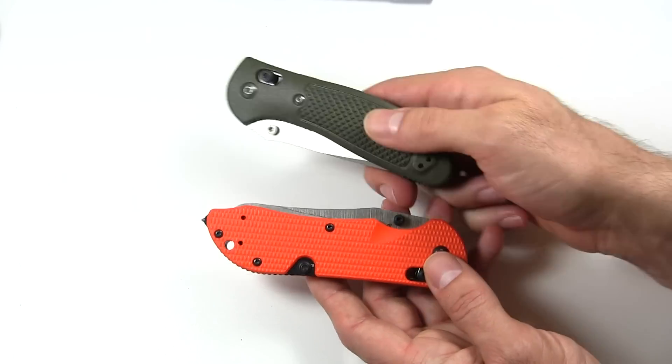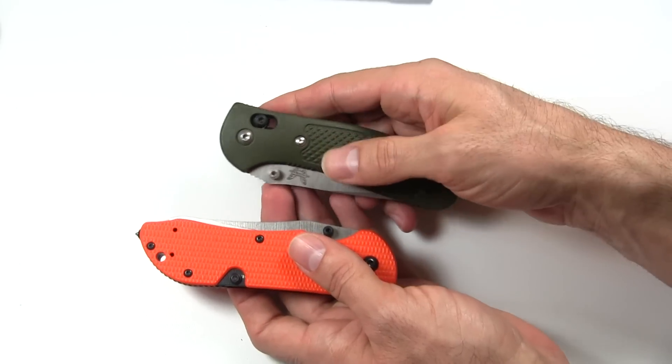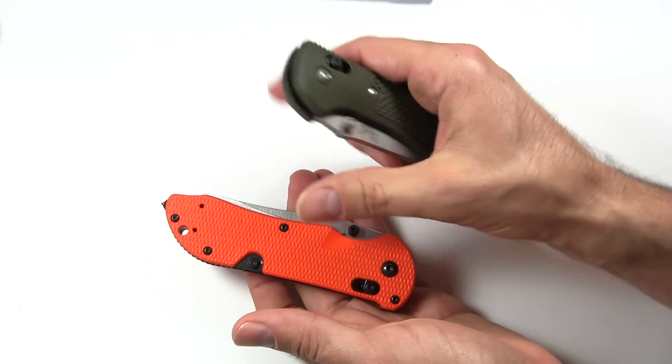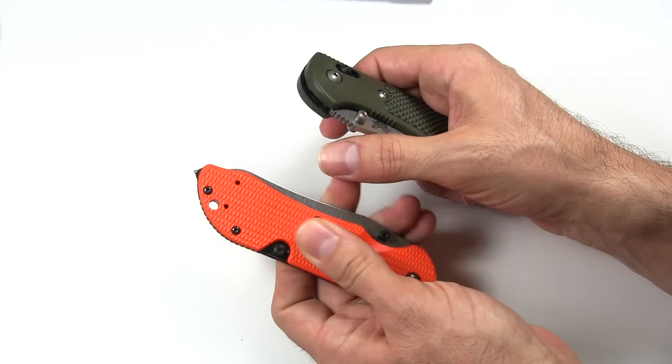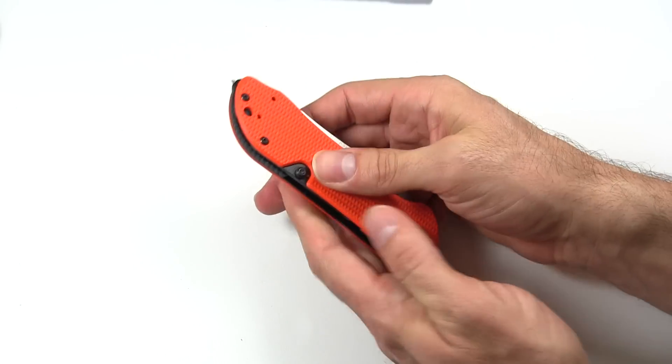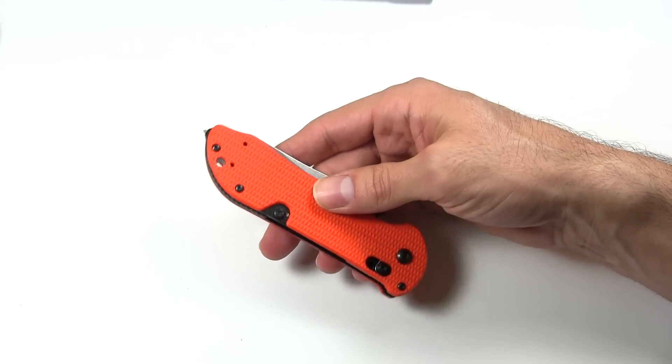And I was used to something like this Griptilian where, you know, the name Griptilian is a pretty grippy knife, but it has some smooth areas here. And even back here in the texture, it's not that rough. But the G10 scales on this are super, I don't want to say sharp, but they're pretty rough. So you're probably not going to drop this knife. So pretty grippy there.